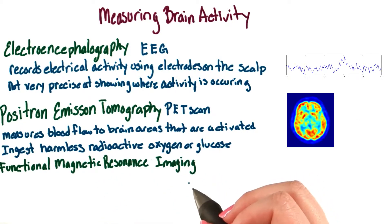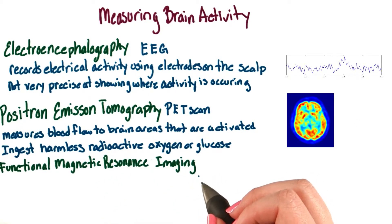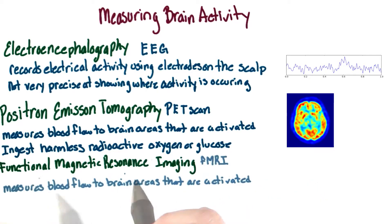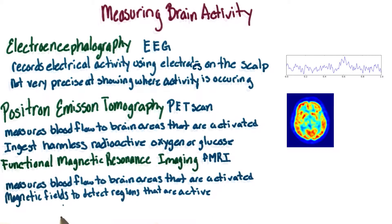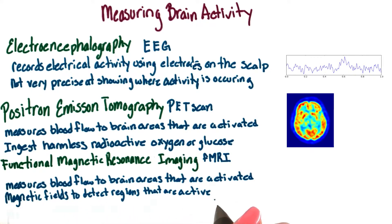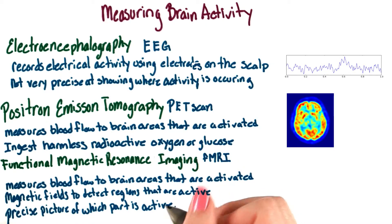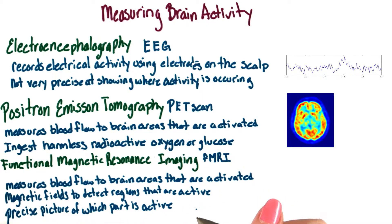And finally, we have the functional magnetic resonance imaging, or fMRI for short. This also measures blood flow to active brain regions, but it doesn't use radioactive forms of oxygen. Instead, the fMRI uses magnetic fields to detect regions of the brain that are activated. One advantage of this is that it can give us a very precise picture of which part of the brain is active.